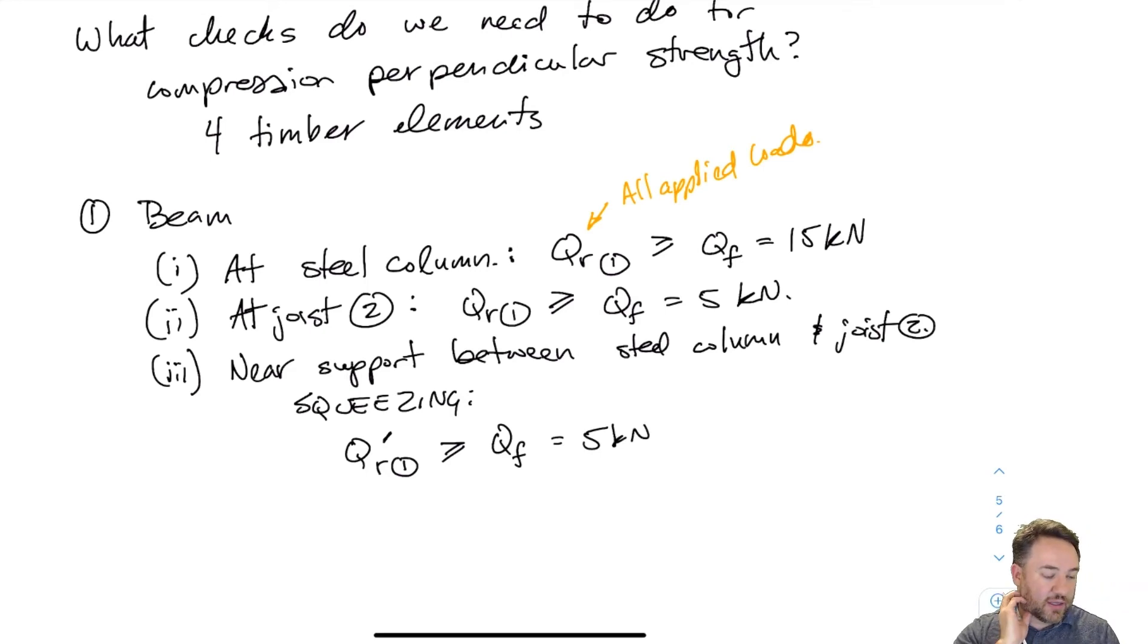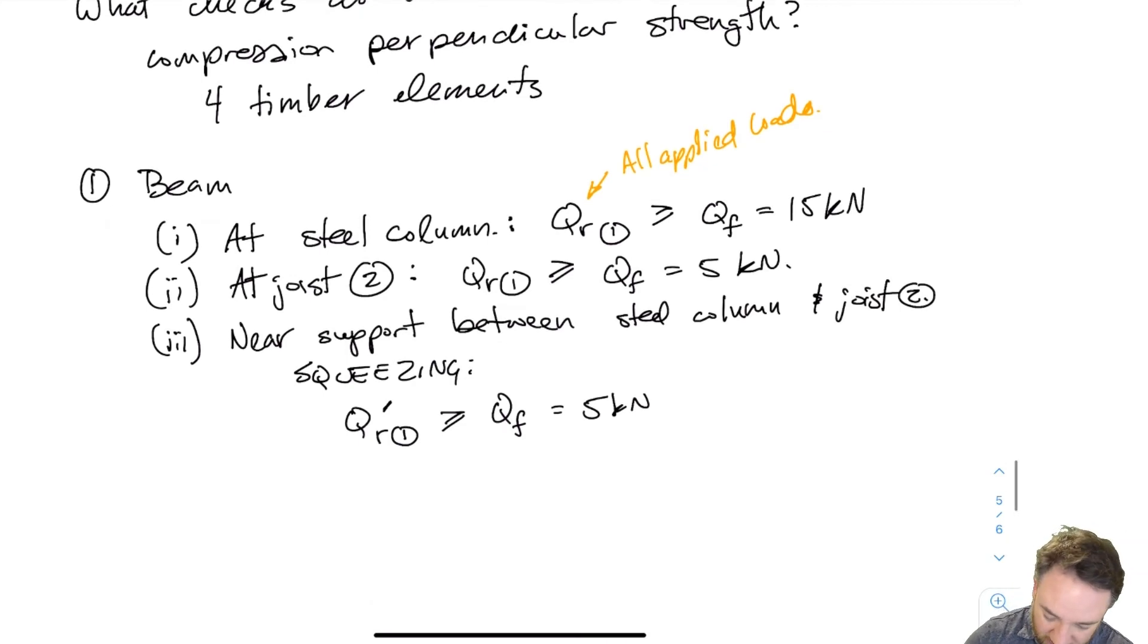Now, certainly, you might say well, why do I bother doing number two? Because this one's going to govern because the qf is the same. And the qr is going to certainly be smaller for number three than it is for number two. Well, that is probably the case. But don't forget that for number three, I use an average area between the area at the top and the area at the bottom. So we might not necessarily get a smaller resistance in three than we do for two because the area might be bigger. So I suggest you check both.